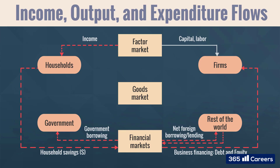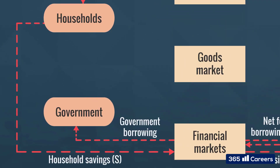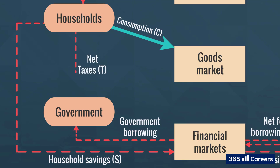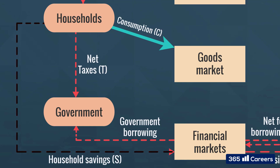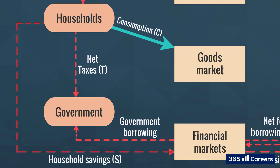Households spend part of their income on consumption on the goods market. We will denote the consumer spending on final goods and services with capital C. Out of their total income, households also pay taxes to governments, and what's left after that is accumulated and deposited to financial markets in the form of savings, denoted as S.